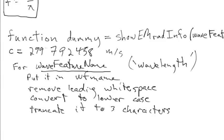For example, if the input is 'wavelength', removing whitespace and converting to lowercase leaves it alone, then truncating to three characters changes it to just 'WAV'. So I think we've got that covered.